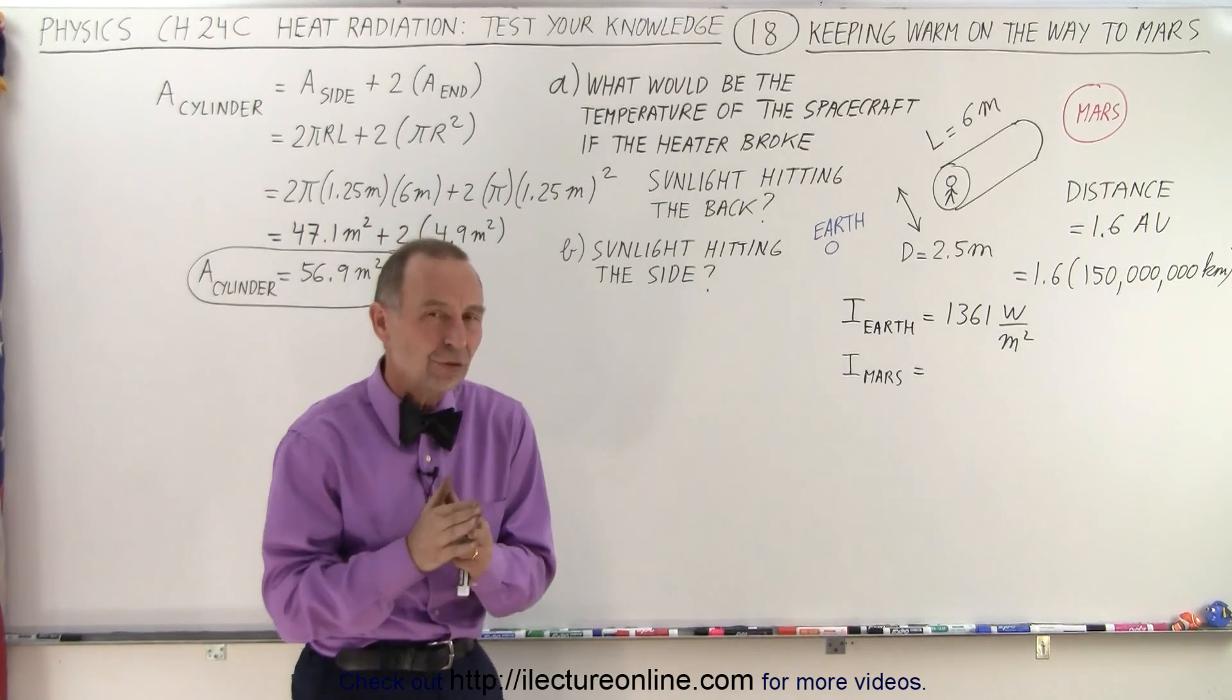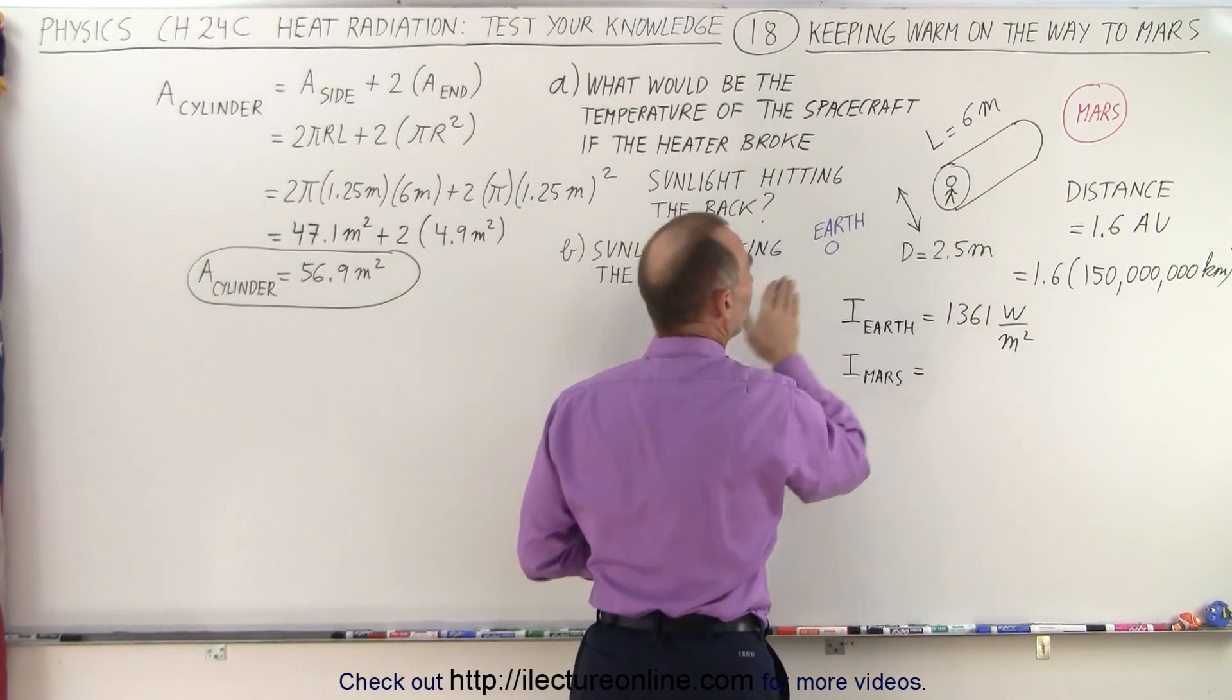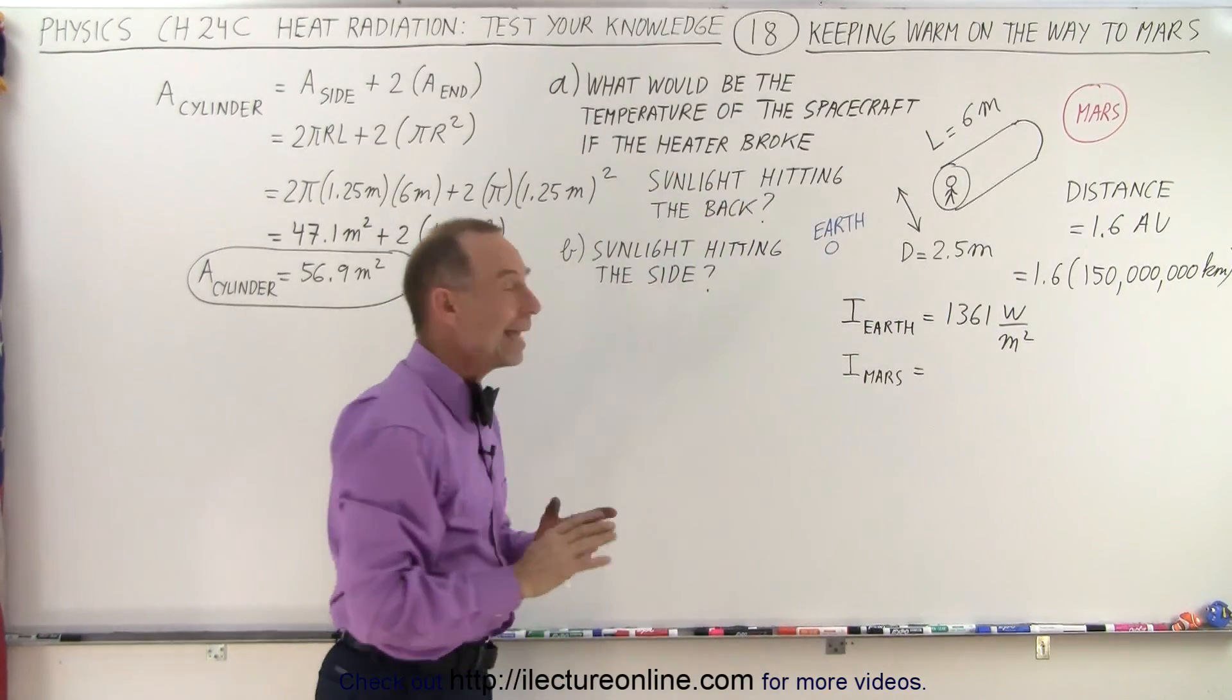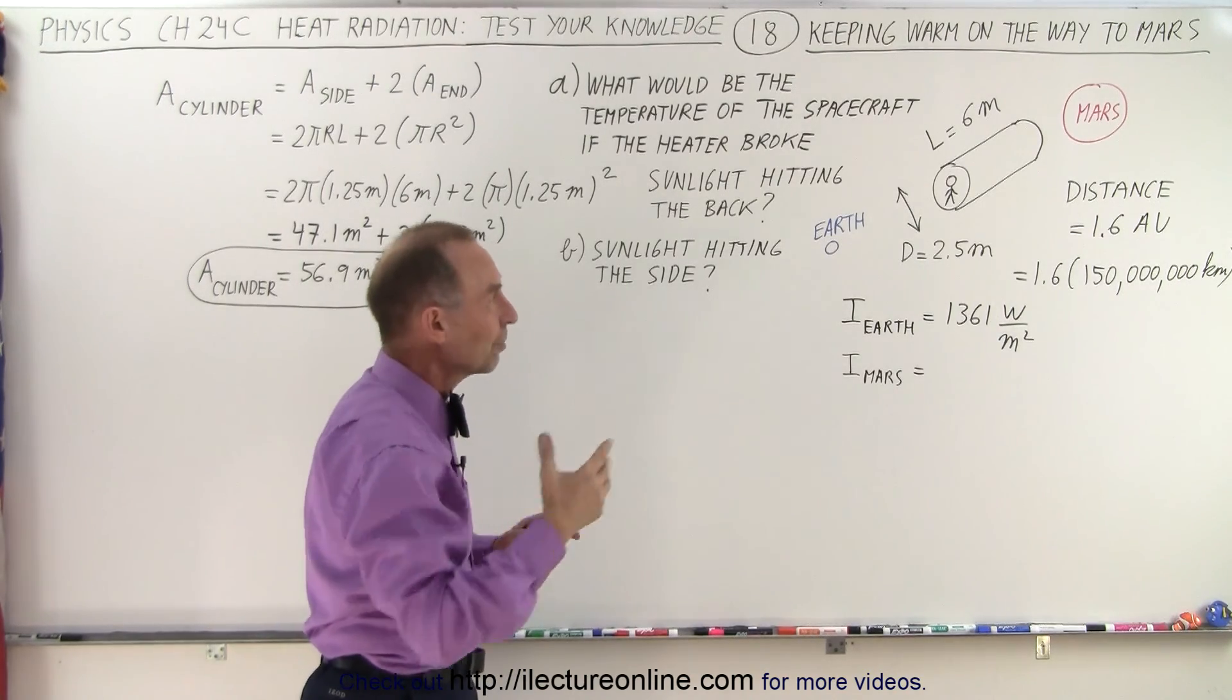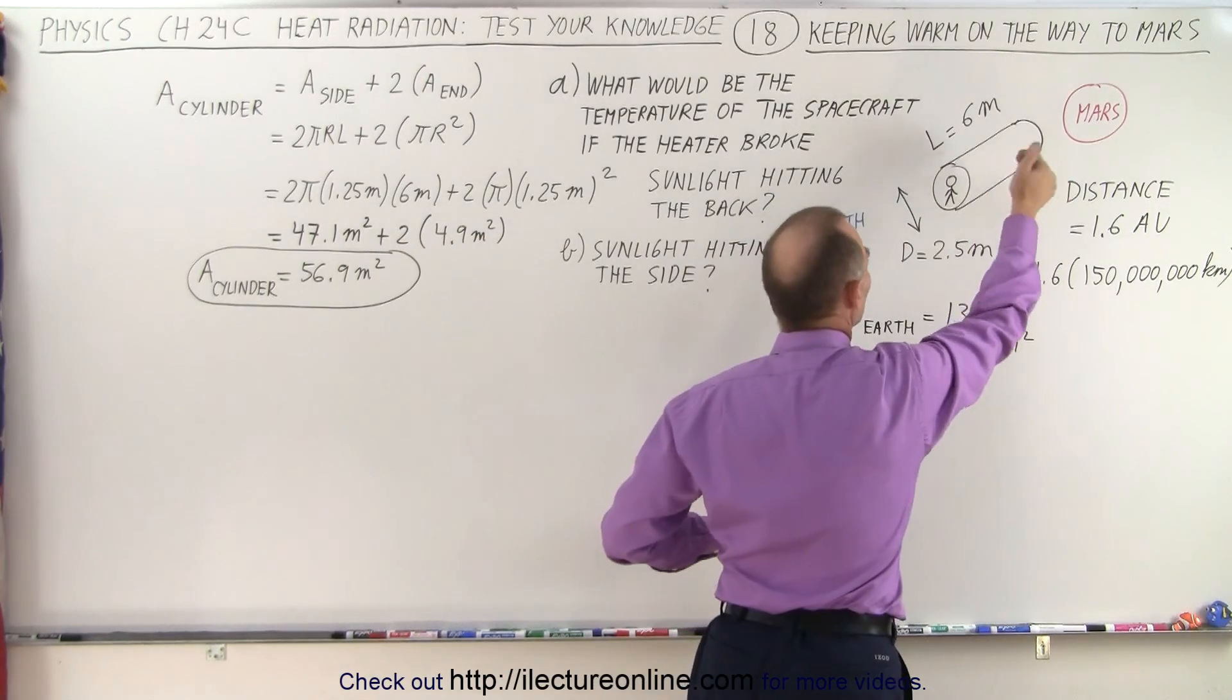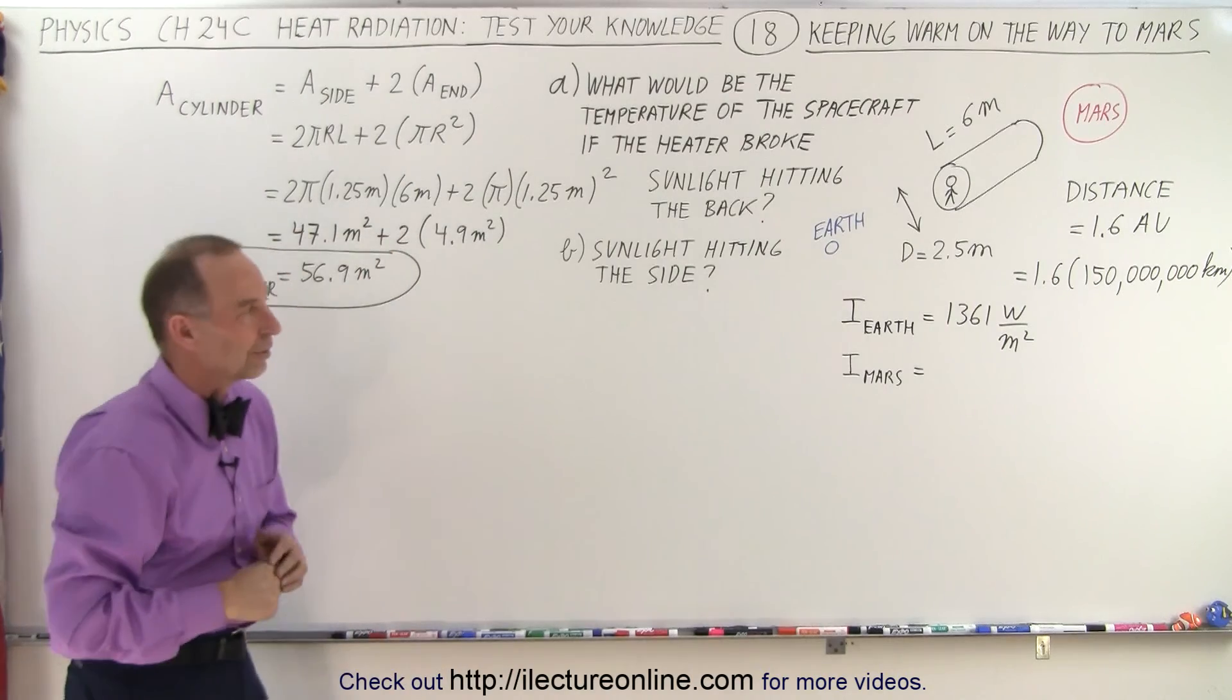What would the temperature of the spacecraft be? First of all, if the orientation is such that only the backside would receive sunlight, then we'll call that Part A. And then, of course, when they get smarter, wait a minute, we want it a little warmer, then they turn the spacecraft sideways as they're approaching Mars so they get more sunlight. The sunlight would now hit the entire side of the spacecraft. What would be the temperature at that point in time?